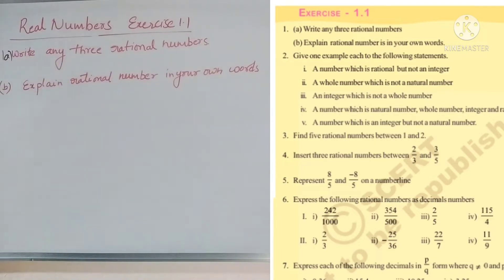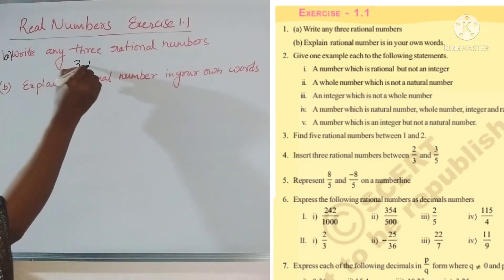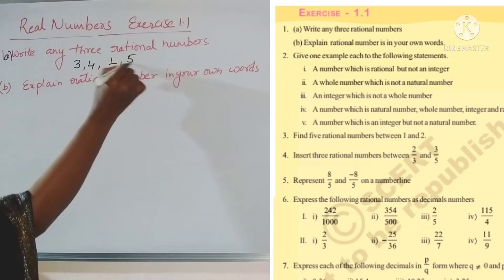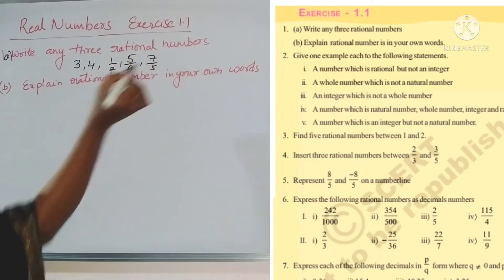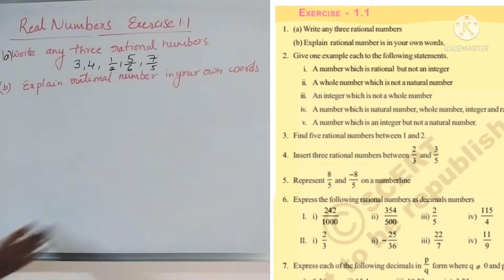Part a: Write any three rational numbers. Rational numbers — as I already explained — include all natural numbers, whole numbers, integers, and rational fractions. Examples: three, four, one by two, five by six, seven by five, and negative numbers also. They asked for three, but we can write more like that.